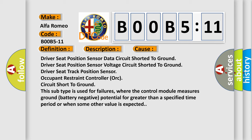This subtype is used for failures where the control module measures ground battery negative potential for greater than a specified time period or when some other value is expected.